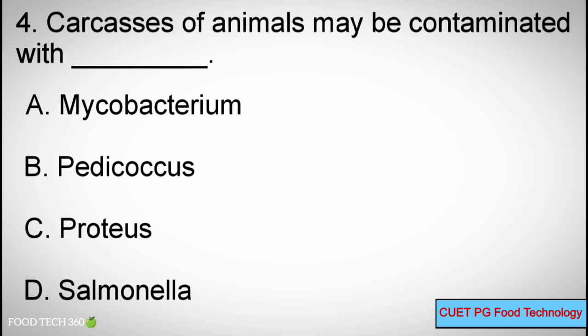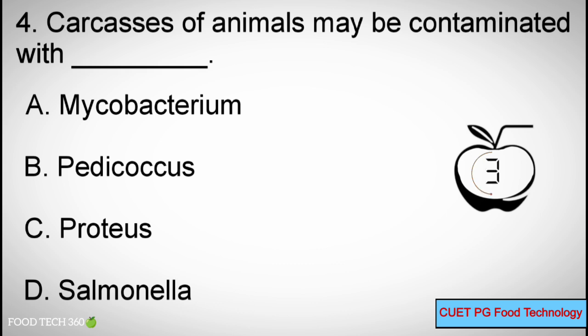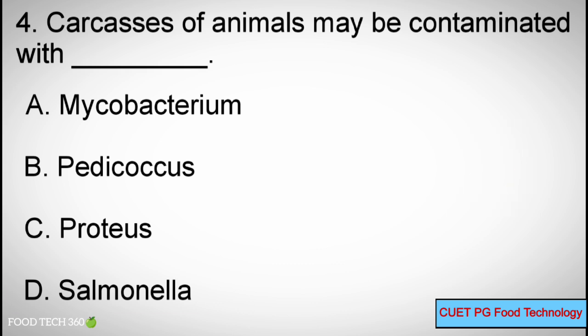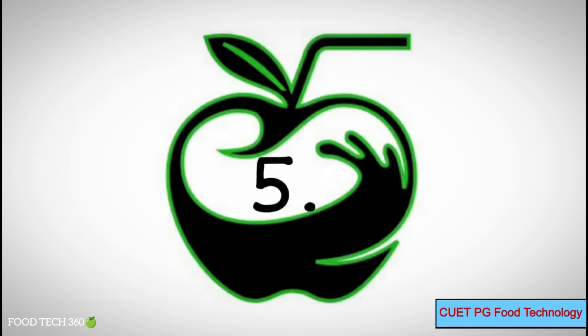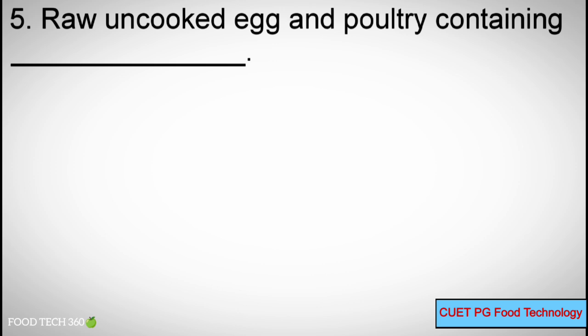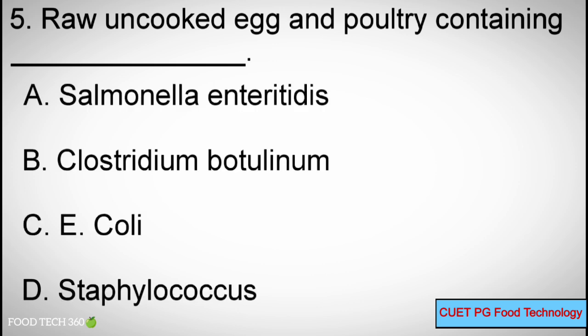Question number 4: Carcasses of animals may be contaminated with — Options: A) Mycobacterium, B) Pediococcus, C) Proteus, D) Salmonella. Correct answer: D) Salmonella.